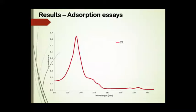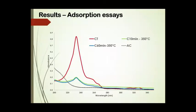Here we show you the red line that corresponds to the spectral curve of chlorothalonil, and then when this solution is passed through the carbon, for instance, the one obtained at 10 minutes of pyrolysis, the signal decreases by more than 70%. Similar result is obtained with the carbon at 60 minutes, while when we compare the retention ability with the commercial activated carbon, we found that activated carbon has 100% of retention.